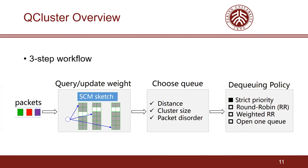Based on this insight, we propose the Queue Cluster framework. The workflow of Queue Cluster consists of three steps. First, we design an algorithm named SCM Sketch to query the packet weight and update the queue weight. Second, considering various factors including the distance between the packet weight and the queue weight, the cluster size, and the packet disorder, we choose a queue for every incoming packet. Third, for different flow scheduling tasks, we adopt different dequeuing policies.